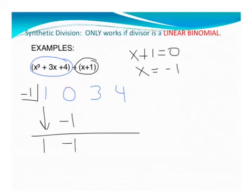Negative 1 times 1 is positive 1. Add the 3 plus the 1, and I get 4.